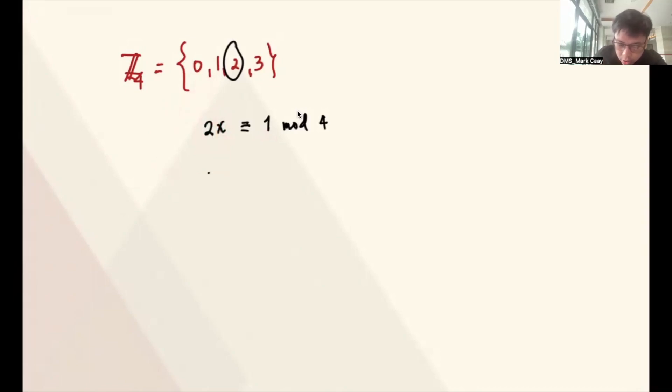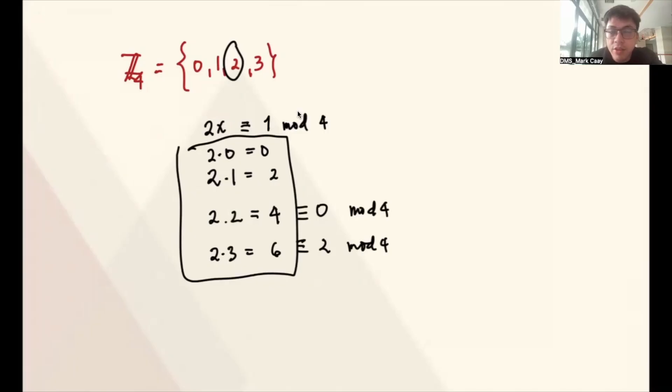There are only four elements, so we can check one by one. 2 times 1, the answer is 2, so it's not congruent to 1 mod 4. 2 times 2, the answer here is 4, which is congruent to 0 mod 4. 2 times 3, the answer here is 6, which is congruent to 2 mod 4. Even 2 times 0, the result is 0. So there's nothing that gives 1. Therefore, number 2 in Z4 does not have an inverse.